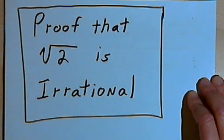This video is provided as supplementary material for courses taught at Howard Community College. In this video, I'm going to do a proof that the square root of 2 is an irrational number.